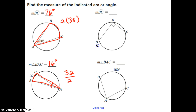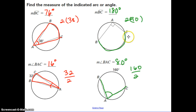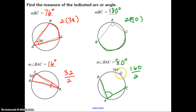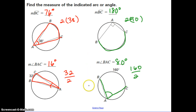Go ahead and pause. Try these two examples and then check back with me. Hopefully you found the measure of arc BC to be 180 degrees — double the inscribed angle — and the measure of angle BAC to be 80 degrees, half of the intercepted arc. Depending on what information you're given, you'll either multiply the angle by 2 to get the arc, or divide the arc by 2 to get the angle.